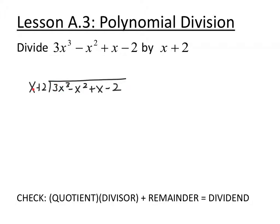To get x, what do I have to multiply x by to get 3x cubed? I need to multiply by 3x squared. Then I multiply back: 3x squared times x is 3x cubed, and 3x squared times 2 is plus 6x squared. Just like in long division, I'm going to subtract this off. Make sure you subtract the entire thing and distribute that negative all the way through. So 3x cubed minus 3x cubed goes to 0 — that should always happen.